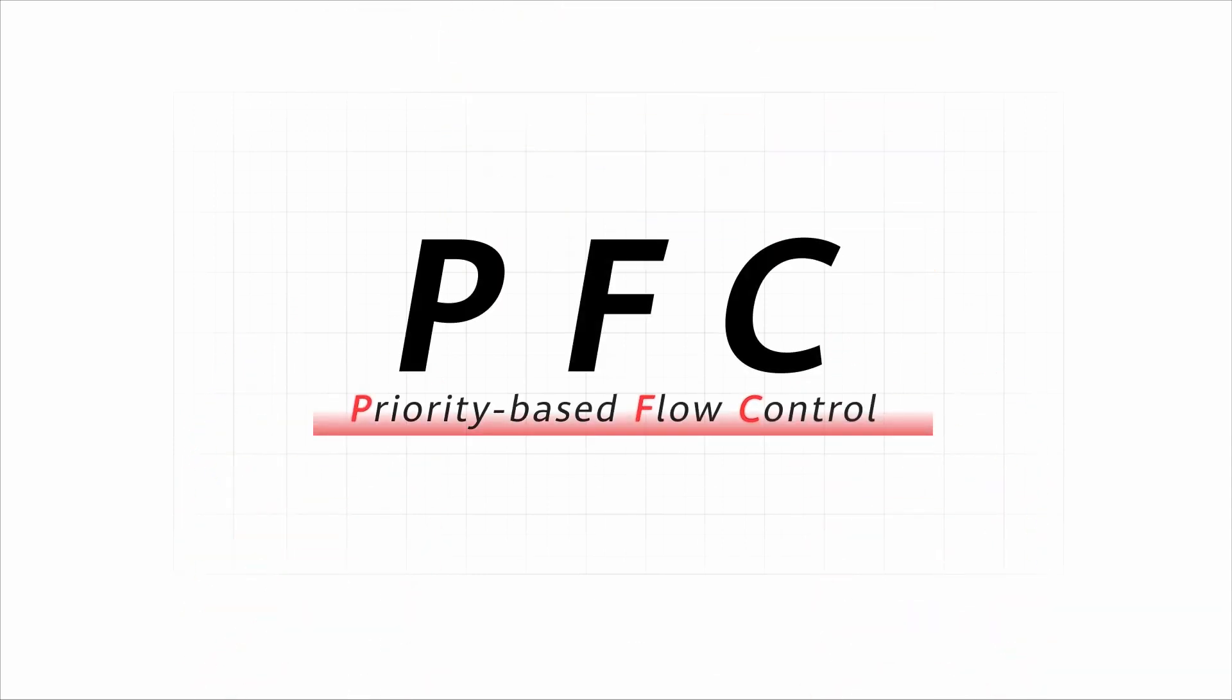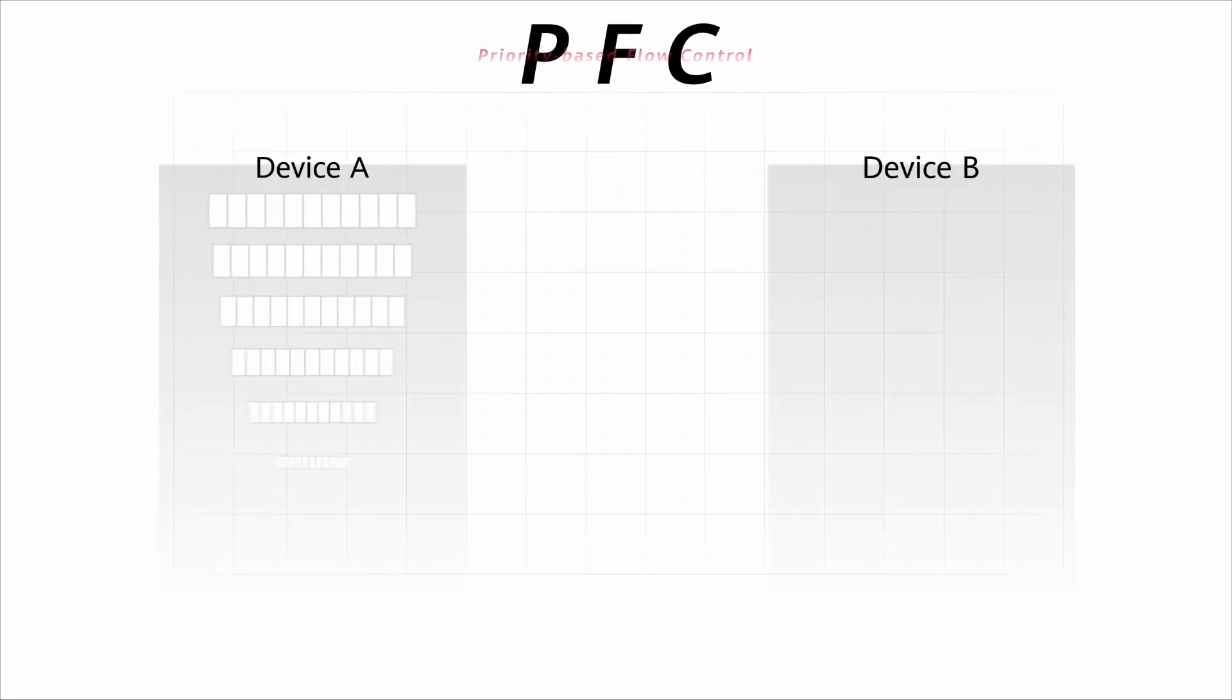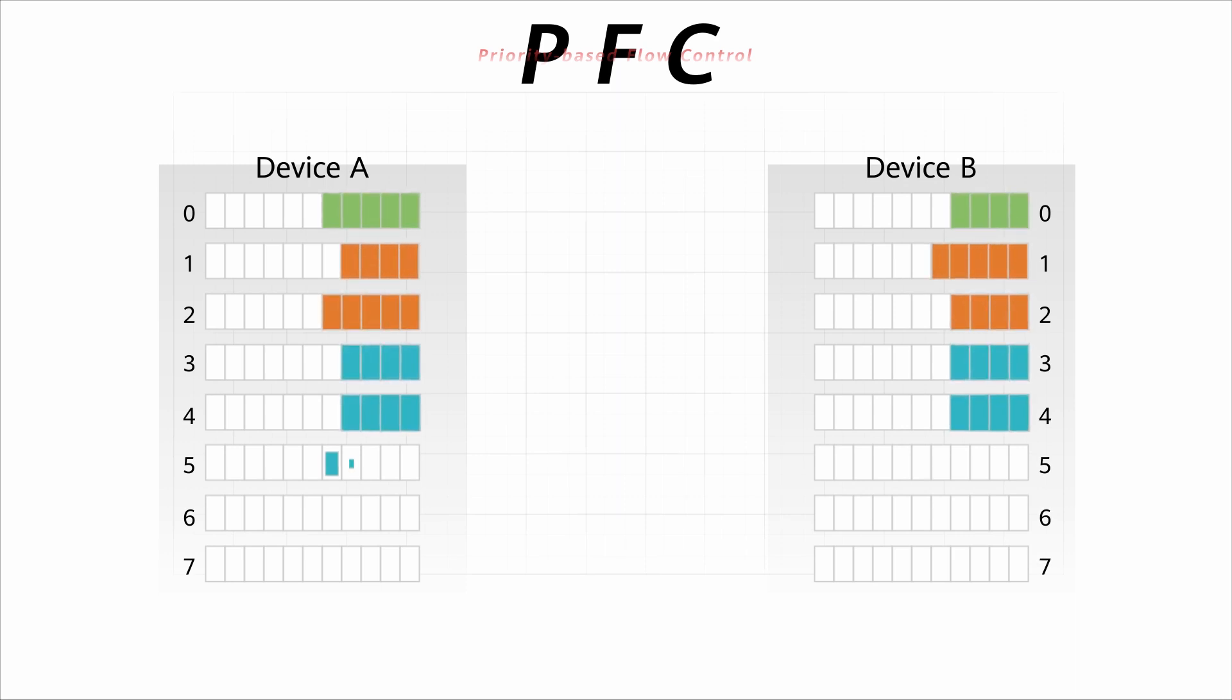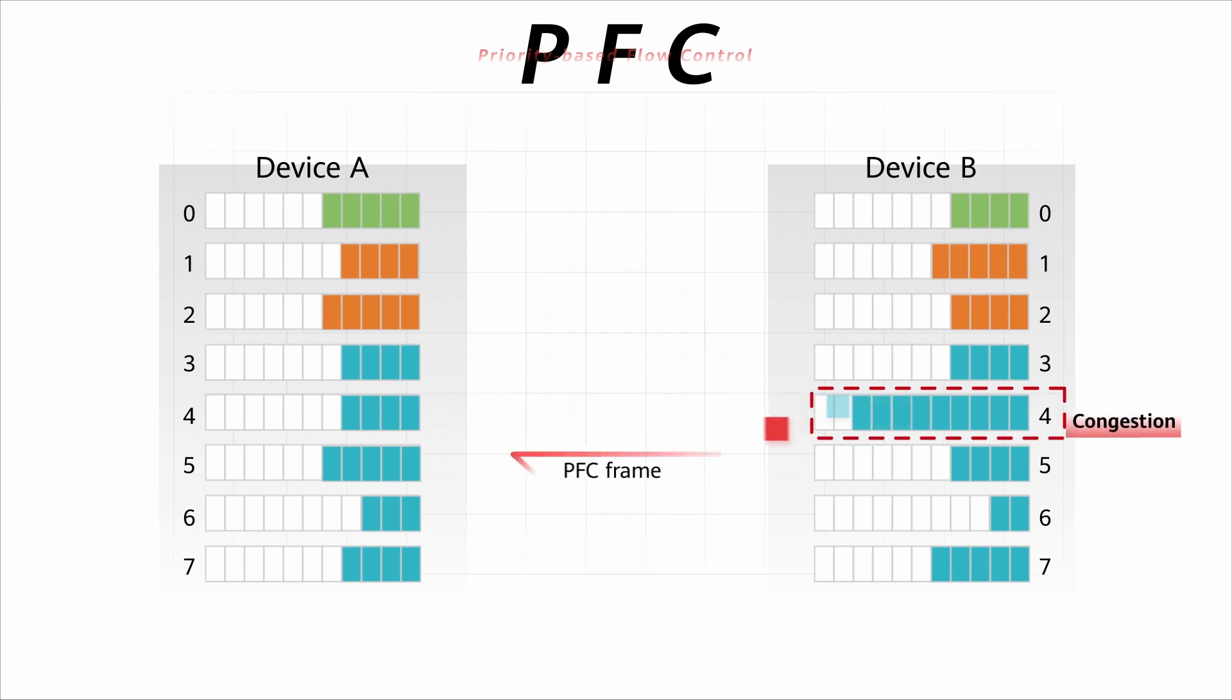PFC divides a device interface into eight virtual queues with priorities ranging from zero to seven. Each queue has its own buffer space for packets. When congestion occurs in a queue on the interface of device B, the device sends a PFC frame to device A, which can be considered as a stop signal.